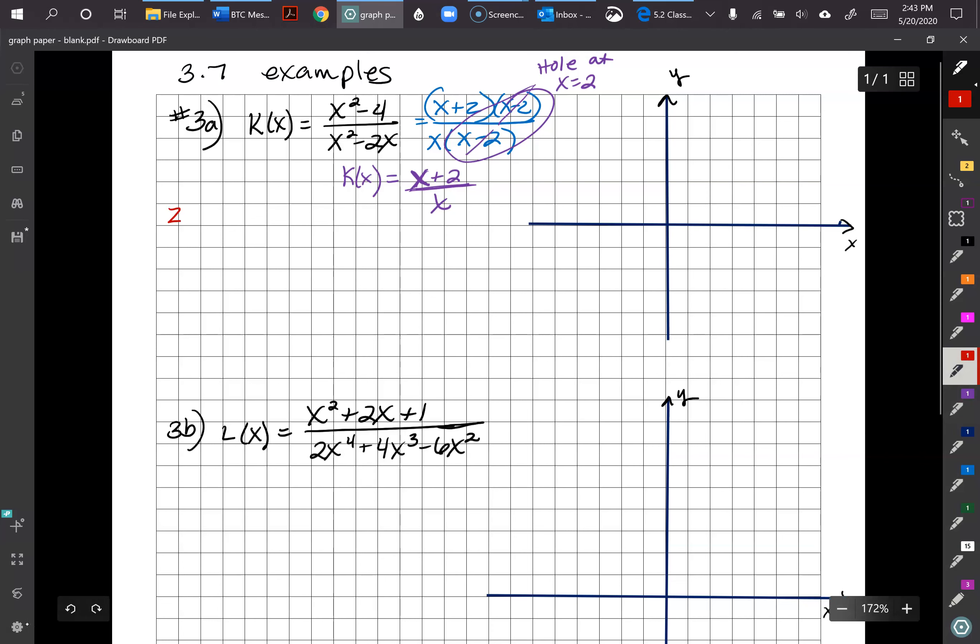So here we have our zeros. Or in this case, it's just a zero. So zero at the point negative 2, zero. We're setting the numerator equal to zero. We have a vertical asymptote at, remember that's always going to be a line, x equals zero.